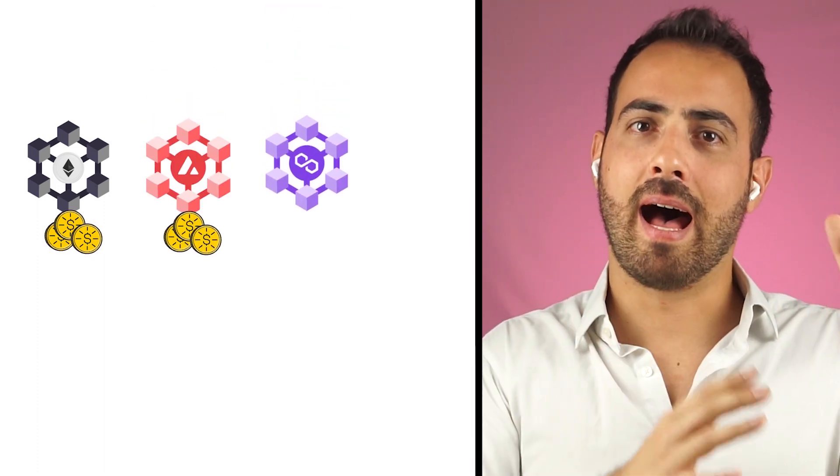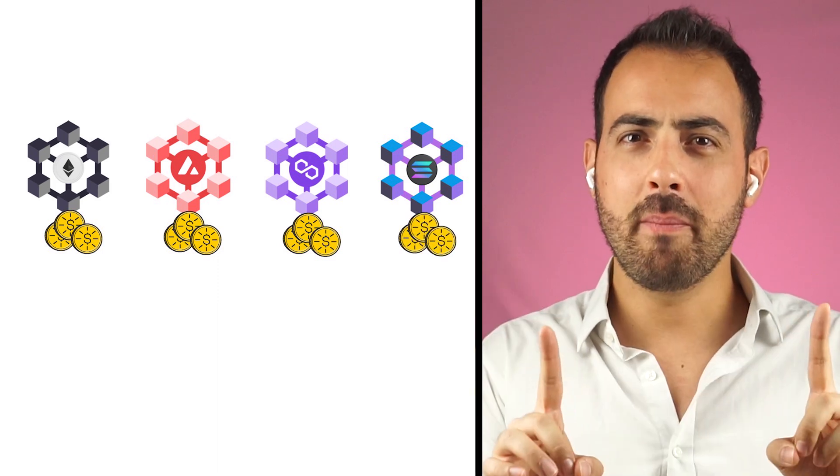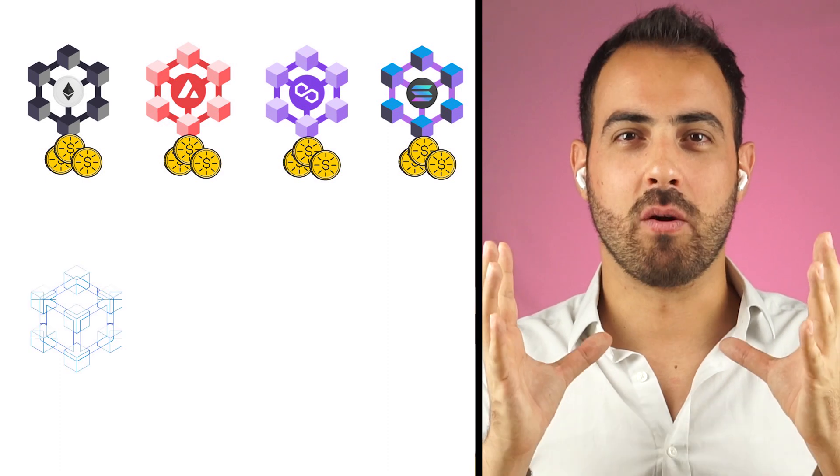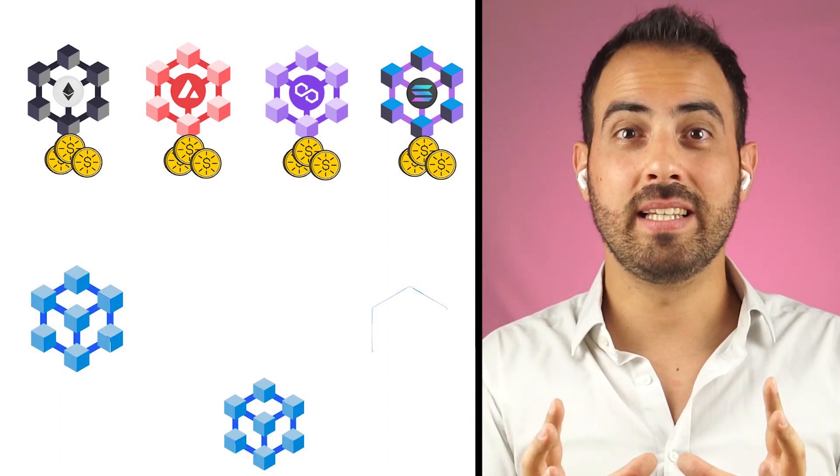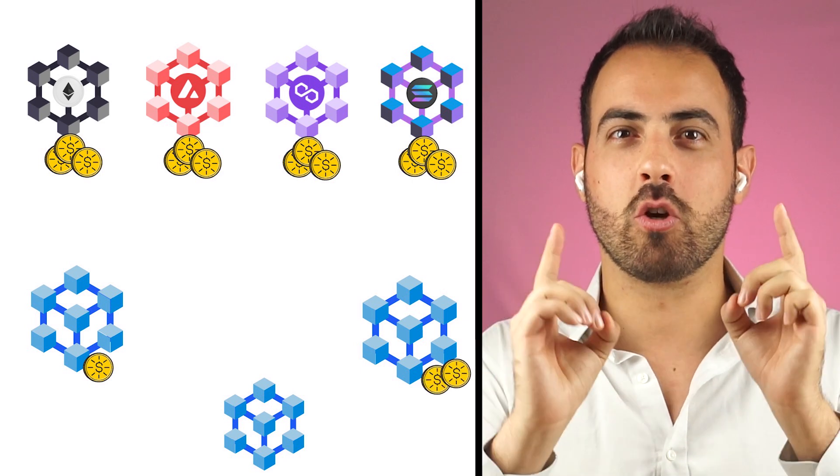Currently, liquidity can be spread across multiple platforms like Ethereum, Avalanche, Polygon, Solana and more. The problem is, as the markets continue to grow, there needs to be a way to ensure liquidity is always available no matter which blockchain you are utilizing.